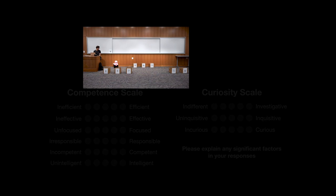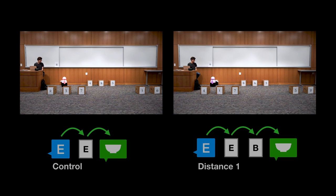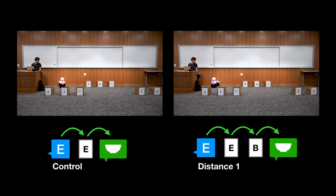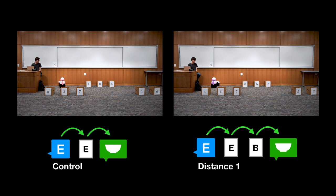Each experiment consisted of 4 or 5 videos. Two videos were the same across all experiments. In the control video, the robot checks the goal box and returns to report the contents. In the distance 1 video, the robot checks the goal box, then checks another box on the way back before reporting.